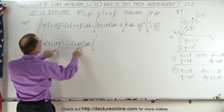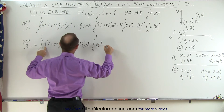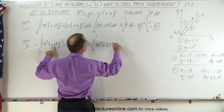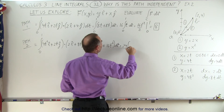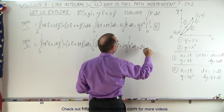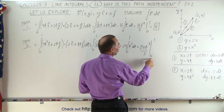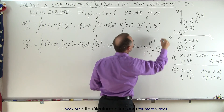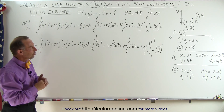Multiplying the i components gives 8t squared, and multiplying the j components gives 2 times 8t = 16t squared, for a total of 24t squared dt. That equals 24 times the integral from 0 to 1 of t squared dt, which is 24t cubed over 3 evaluated from 0 to 1. The lower limit gives 0 and the upper limit gives 24 divided by 3, which is 8. Again we end up with the same result, regardless of which path we took from (0,0) to (2,4).